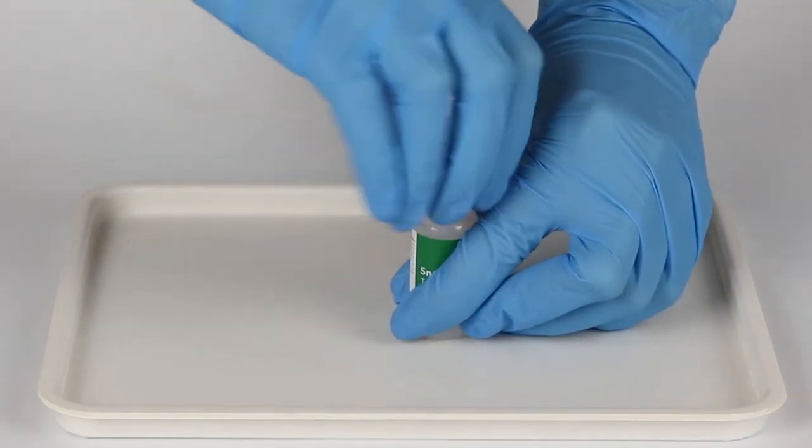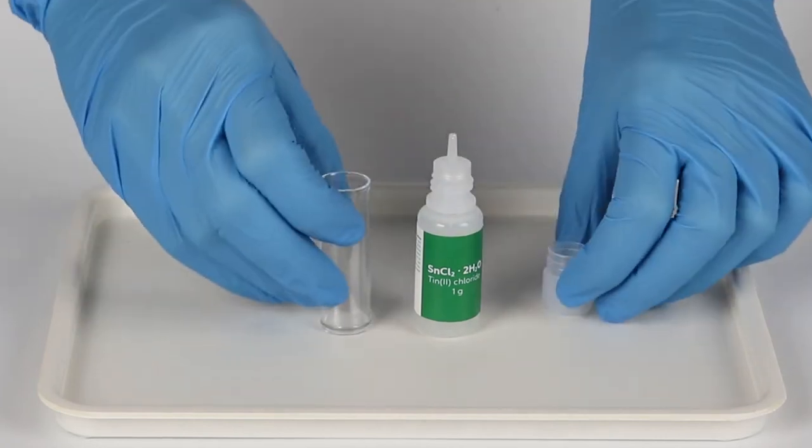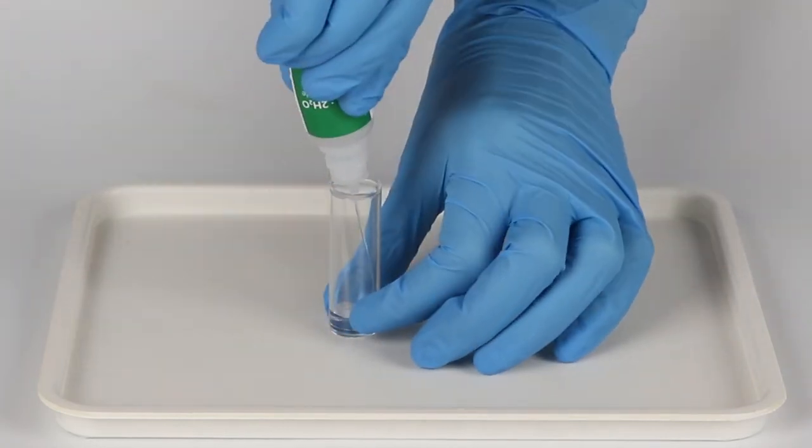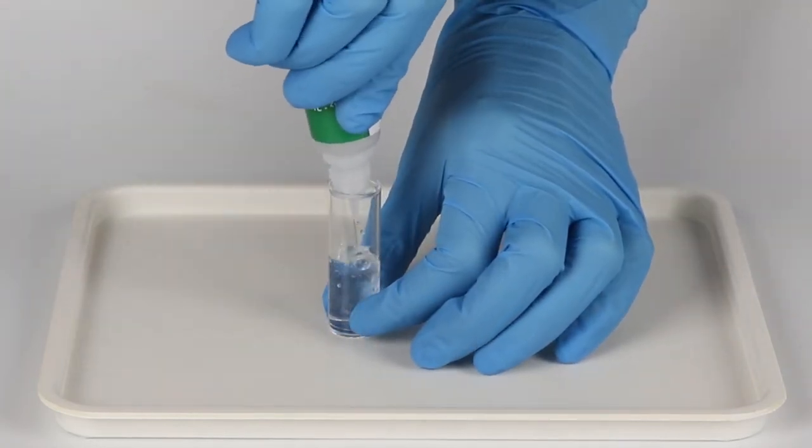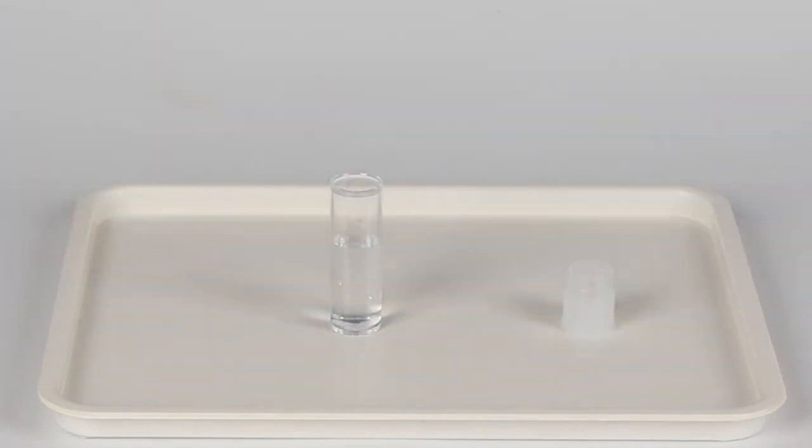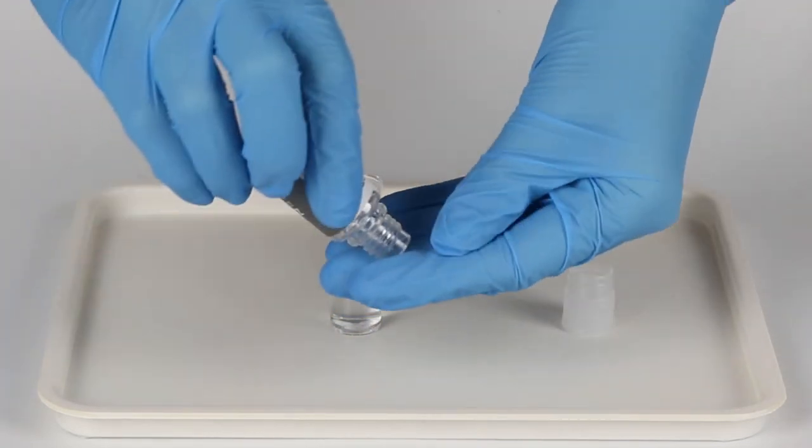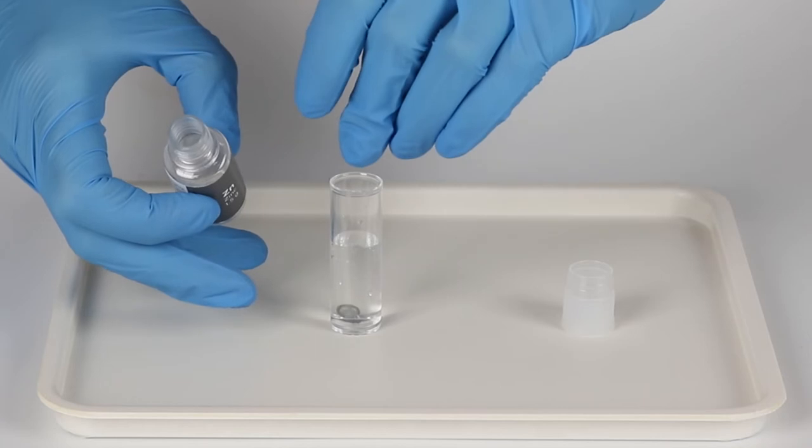Now open the bottle again and fill the vial approximately to its halfway point with the obtained solution. Take a zinc pellet and drop it into the vial. Seal the vial.